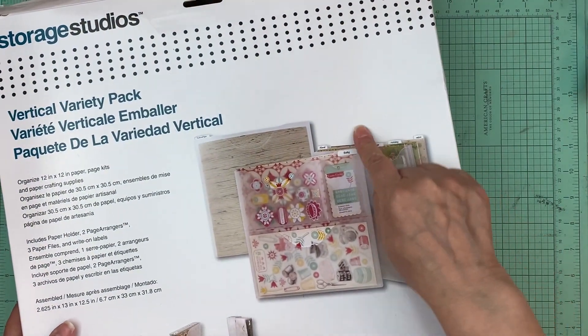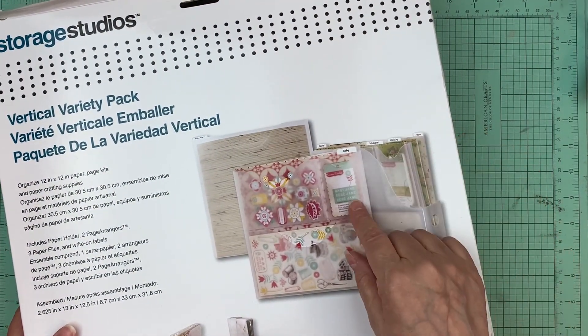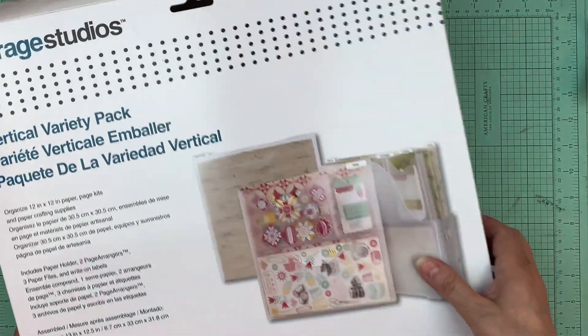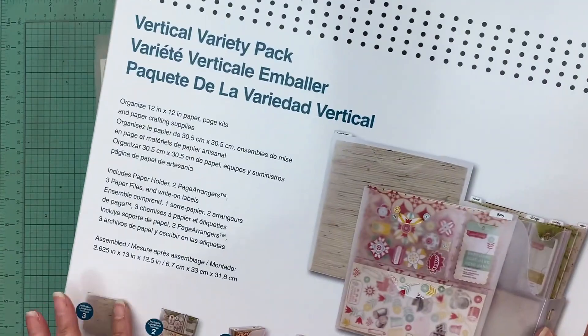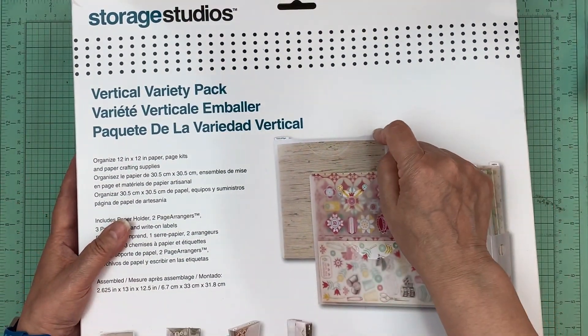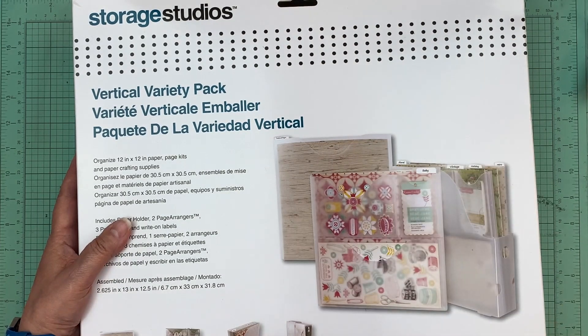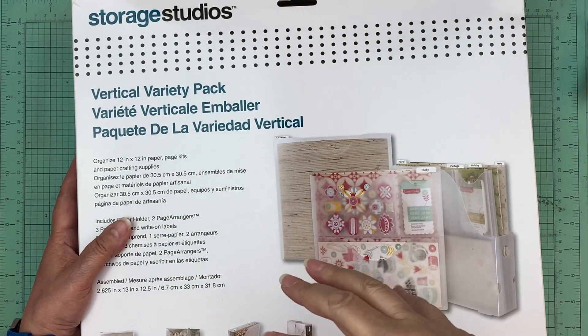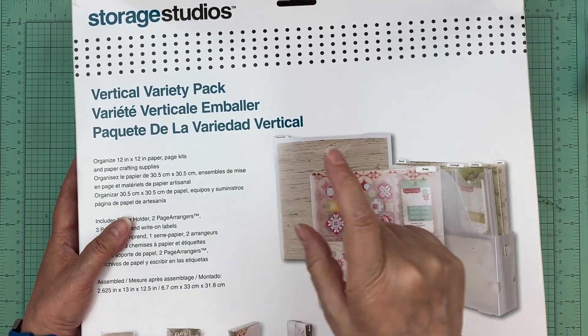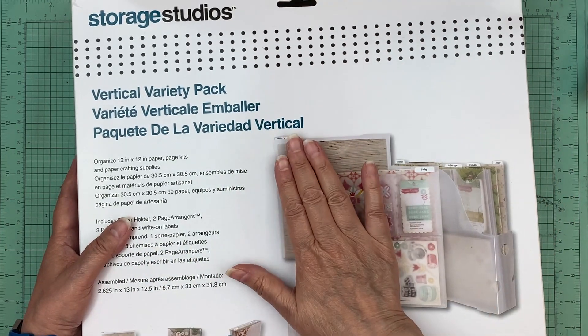It comes with the big one to store your 12 by 12 and then you can have another one per collection and then you have these paper files. So there was three in this, so I got two of these storage studios. I got this on Amazon and I'll have it linked in the description box below under Amazon, where some of my favorite tools are. That's the link, and then under scrapbooking you'll be able to find those.